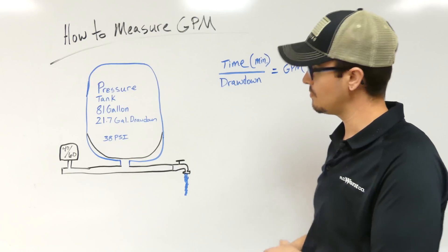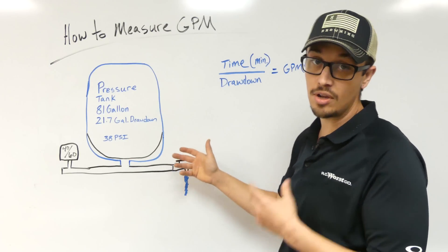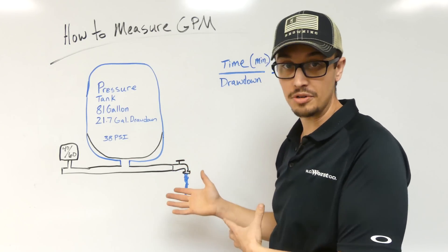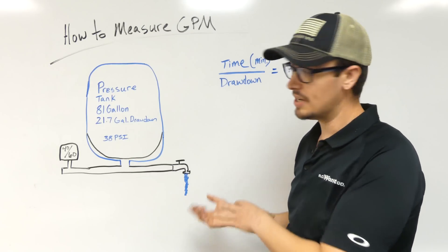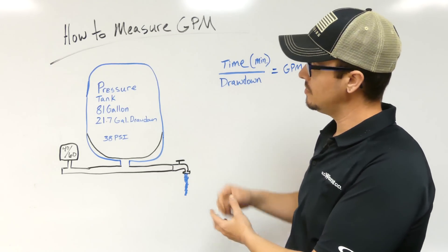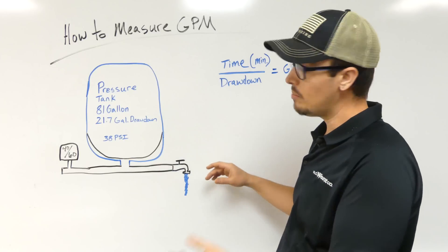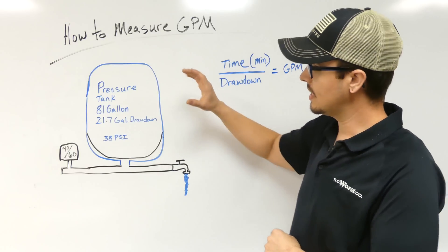So 38 PSI is where we're at. Remember, we do have a video on how to check the pressure in your pressure tank, so I'm not going to go through that in detail. But it does involve draining the system out, so before you want to get started with the stopwatch,